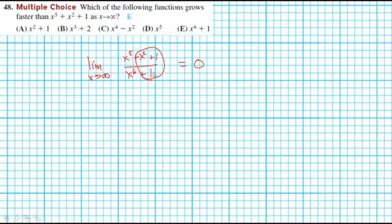You end up with an x on the bottom going to infinity that creates that zero. The answer is E.